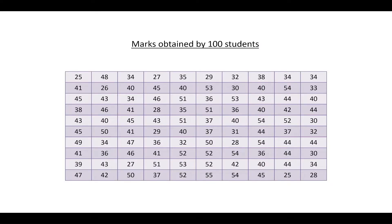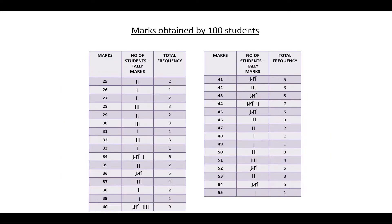Suppose you are given data regarding marks obtained by 100 students in a particular subject. If you look at this data, it is very confusing. But if we arrange the data in this manner, it is much better than the previous representation. Here you can see that 25 marks have been obtained by two students, 26 marks have been obtained by one student, and so on. This is much easier to understand.